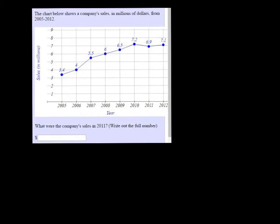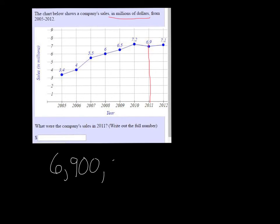If we go to 2011, then we go up and find the dot that says 6.9. But this is in millions of dollars, so we need to write it as 6.9 million dollars. That would be 6,900,000.